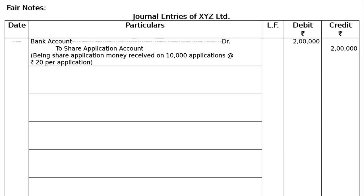Three working notes. Journal entries of XYZ Ltd. The basic format is: date, particulars, debit and credit columns. The first entry is Bank Account debited to Share Application Account. Narration: being share application money received on 10,000 applications at the rate of Rs.20 per application. Amount: 10,000 × Rs.20 = Rs.2,00,000. Debit and credit: Rs.2,00,000 each.